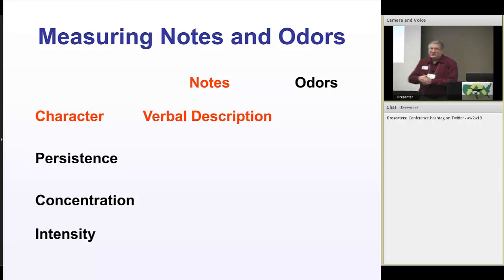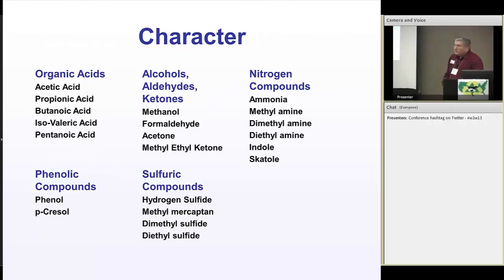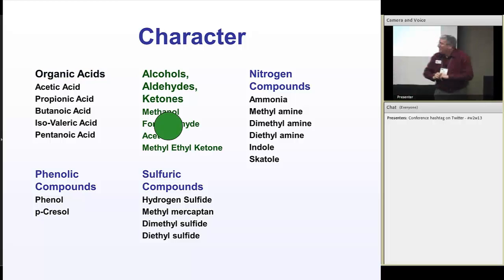We're going to fill up this little chart. We are going to look at the different ways we measure character, persistence, concentration, and intensity for both notes and odors. Odors are mixtures of notes, so we actually measure them quite different. Character of the notes is usually exactly like the perfumers do. We say that it has a honey, a peppery. We just basically say what it smells like. Beyond, it smells like pig poop. We break it down into something more concrete.